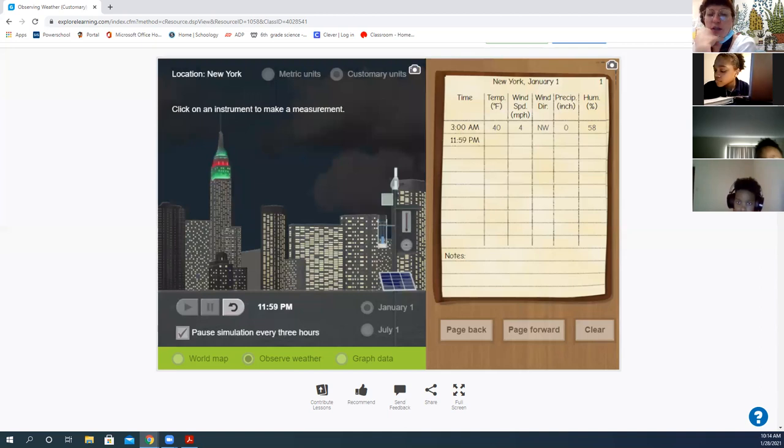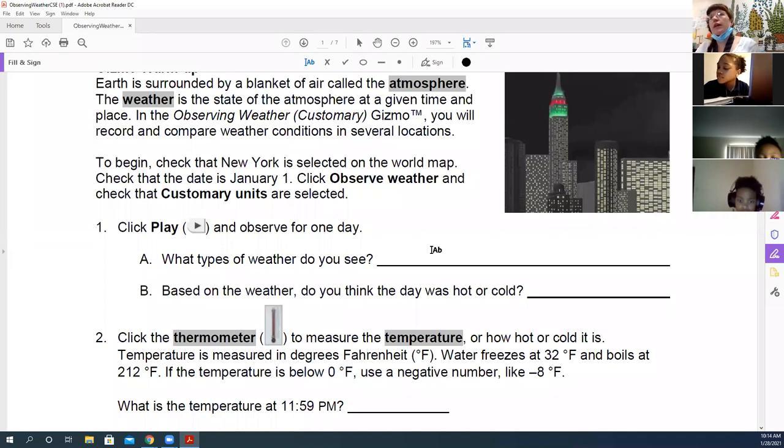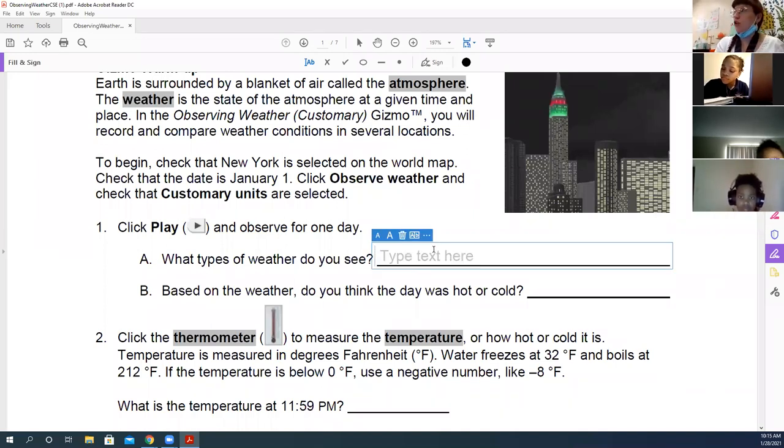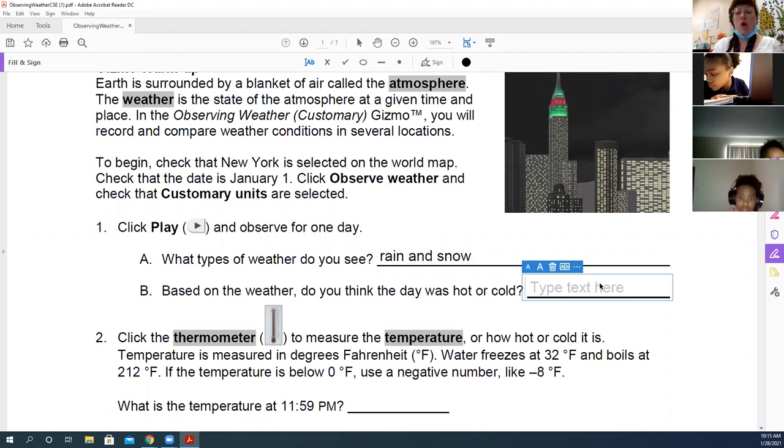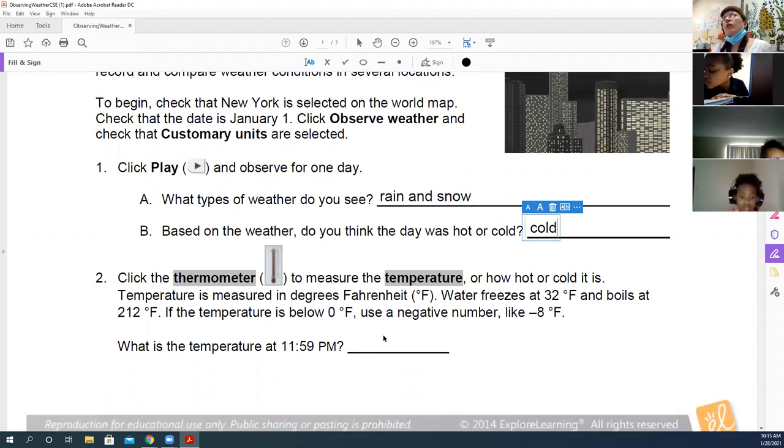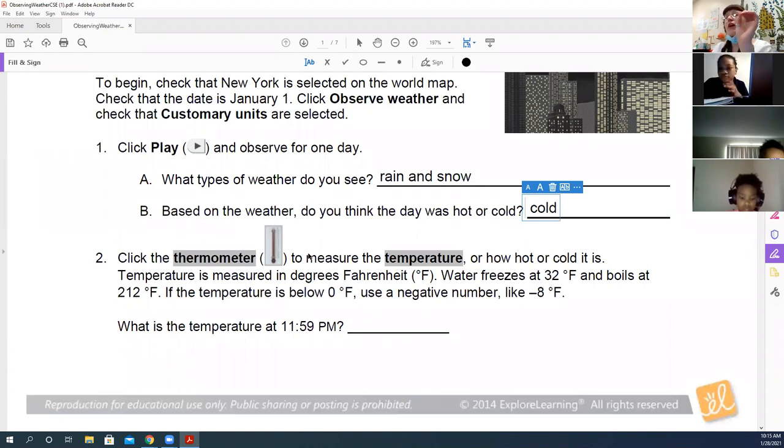All right. So there's my 24 hours. So I'm going to go back to my paper. What types of weather do we see? At least what kind of precipitation? Rain and snow. So do you think it was hot or cold? Cold. Very good. And also, we know it's January in New York. So then we let it go all the way to 11:59 p.m.